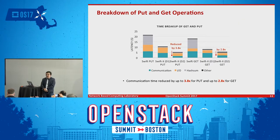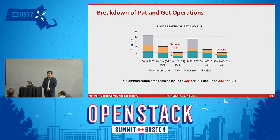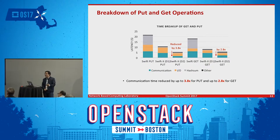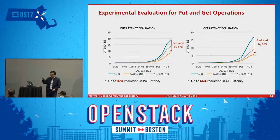Let's look at some performance observations. We break down the time spent in the default Swift path versus design one and design two. For design two, because you bypass the proxy server, the communication time can be significantly reduced by almost 4x compared with the default scheme — with two contributions: the RDMA-based protocol and bypassing the proxy server. For the PUT operation, it's almost 4x improvement, and for the GET operation, it's almost 3x.